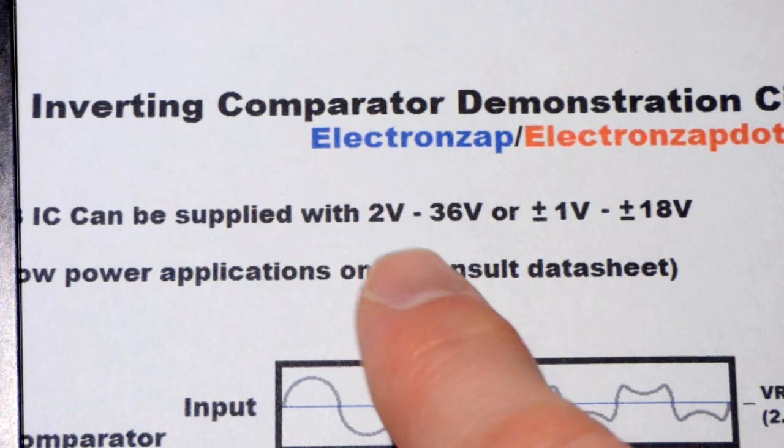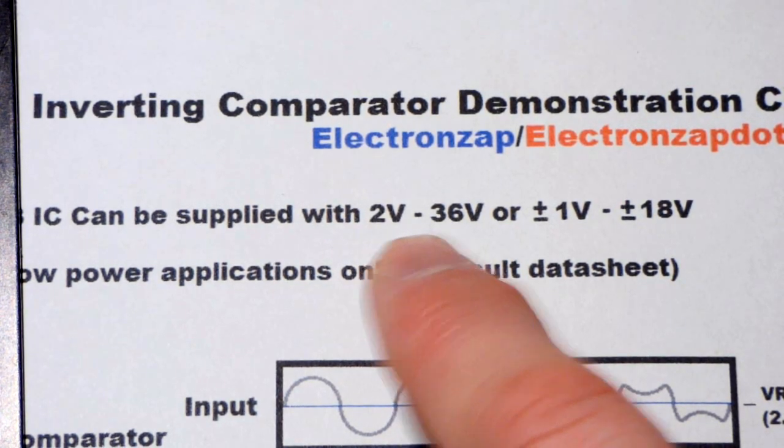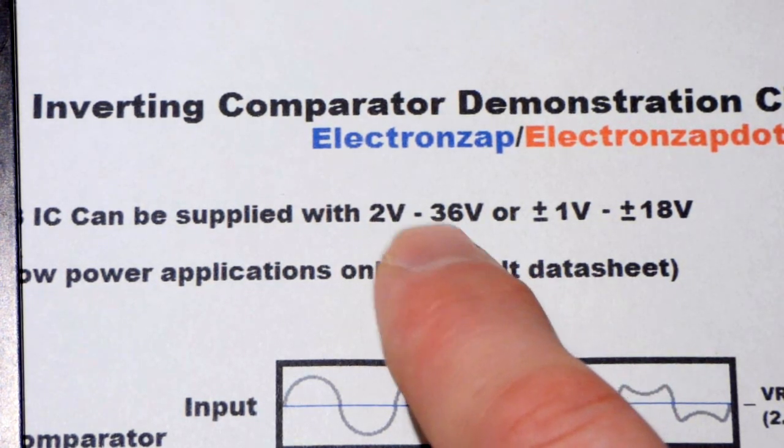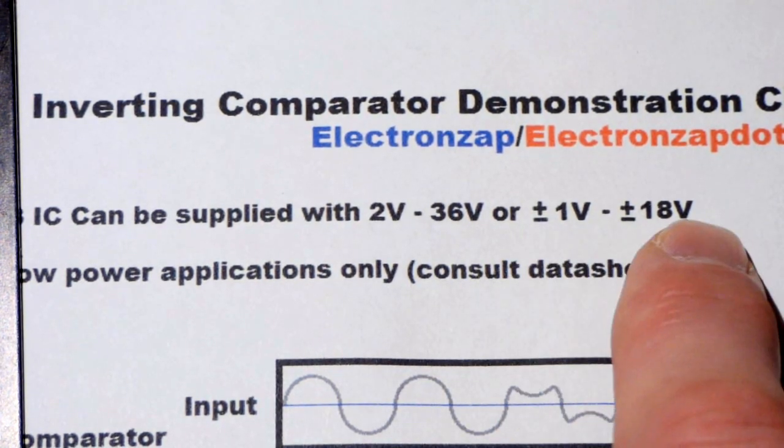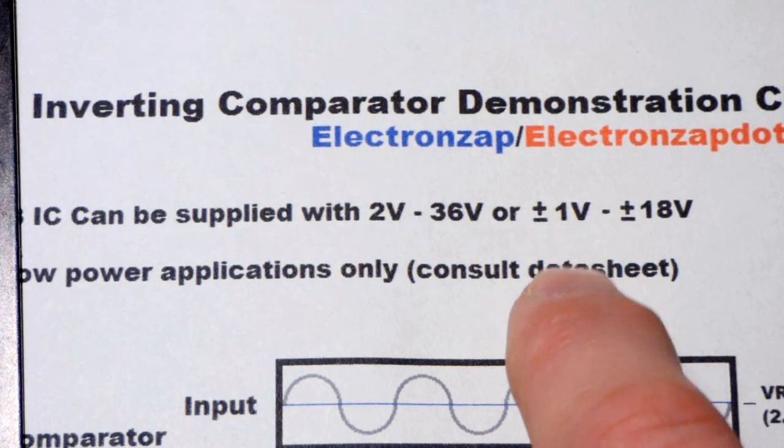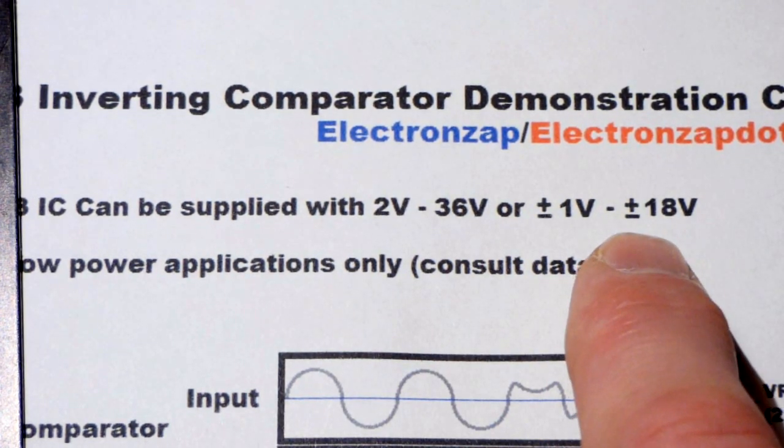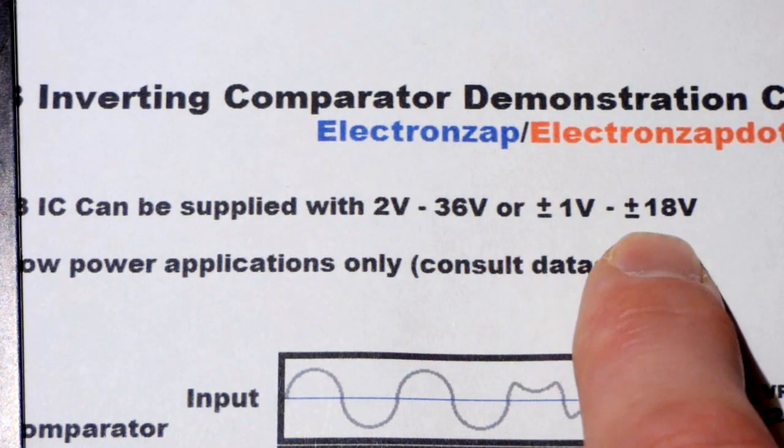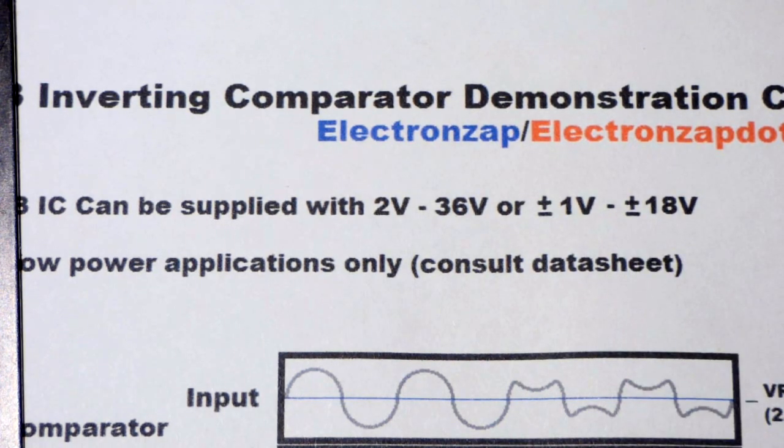Before we move on I want to mention there's a wide range of voltages we can use. We can go down to 2 volts according to the data sheet or up to 36 volts. That's with a single power supply. You could also use a dual or split power supply where you have positive 1 volt down to negative 1 volt, or positive 18 volt down to negative 18 volts, which is the same as 36 volts. There's a ground that's a 0 volt reference point halfway between the positive and negative voltages. You can use either to power this integrated circuit.